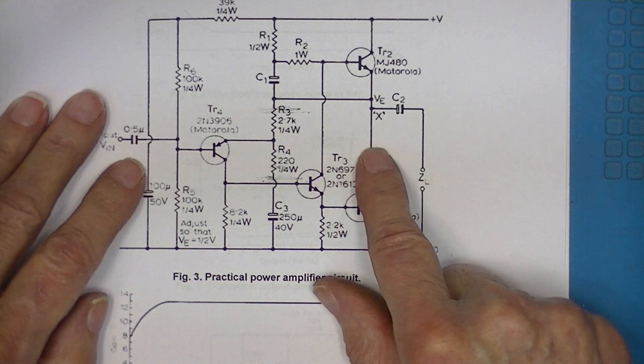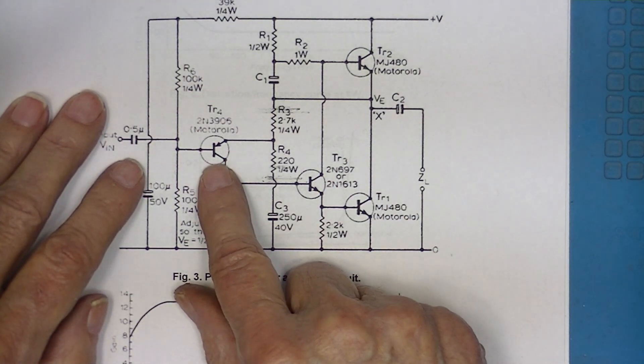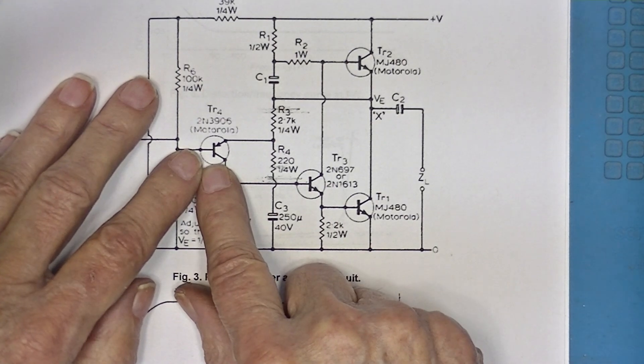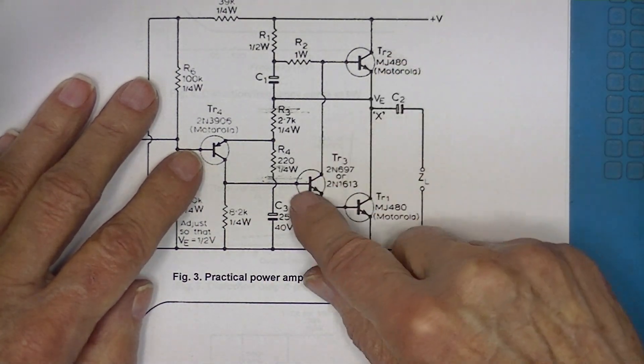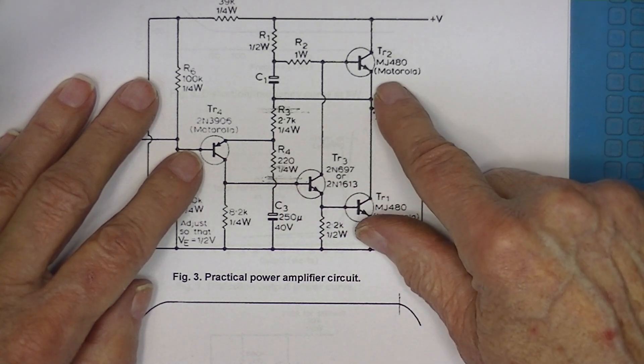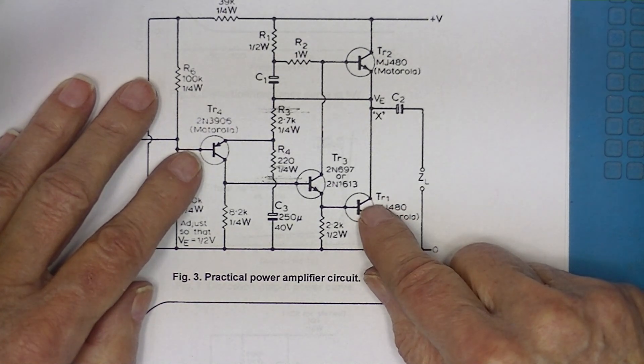It has two coupling capacitors, one for the input, one for the output. Everything else is DC coupled. The first stage is a PNP stage, and the second and third stages are NPN. In 1969 it was hard to get quality PNP transistors.